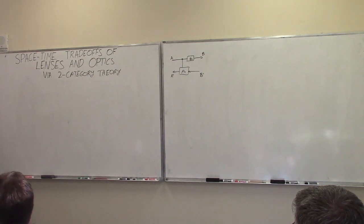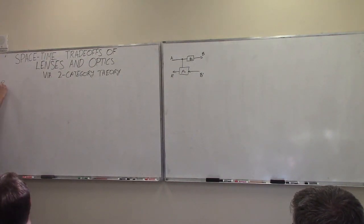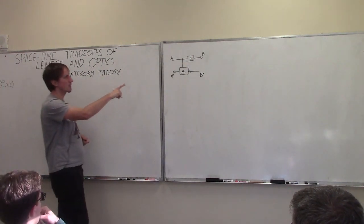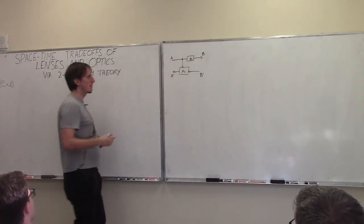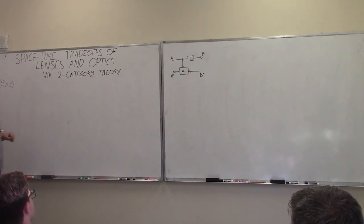Alright, lenses. They're defined in a category — I'm going to fix a Cartesian category C for this talk. In this category we can define lenses. A lens is a gadget which has a forward part and a backward part. I assume many people are familiar with lenses, and many people might not be. I hope this under-the-hood aspect might help understand them.